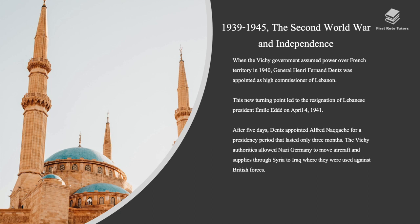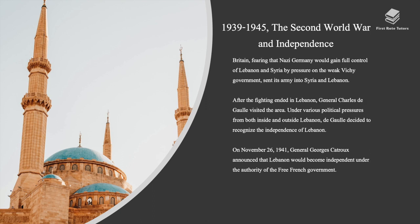When the Vichy government assumed power over French territory in 1940, General Henry Fernand Dentz was appointed as High Commissioner of Lebanon. This new turning point led to the resignation of Lebanese president Emile Eddé on April 4, 1941. After five days, Dentz appointed Alfred Naccache for a presidency period that lasted only three months. The Vichy authorities allowed Nazi Germany to move aircraft and supplies through Syria to Iraq, where they were used against British forces. Britain, fearing that Nazi Germany would gain full control of Lebanon and Syria by pressuring the weak Vichy government, sent its army into Syria and Lebanon.